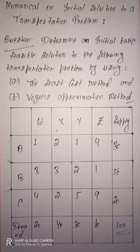A question has been given to you in this way: Determine an initial basic feasible solution to the following transportation problem by using the Least Cost Method and Vogel's Approximation Method.